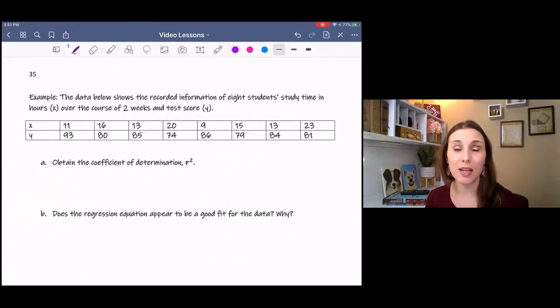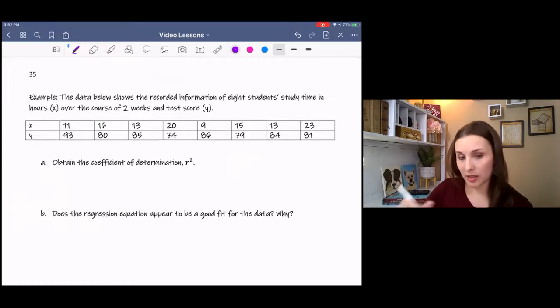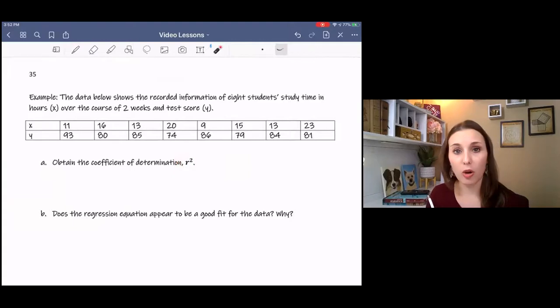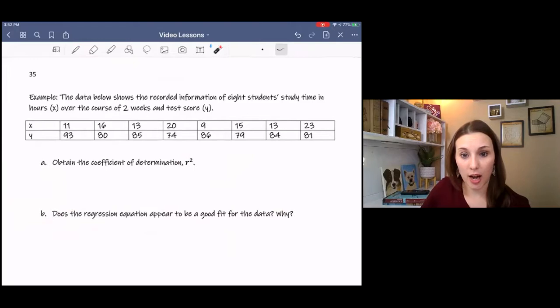This was the same exact example from the last video where we found the regression equation. So I want you to do those same steps again. And this time, instead of writing down the regression equation, I want you to write down the coefficient of determination, which is r squared. Then I want you to decide if it's a good fit or not. So go ahead and pause it and try it and come back and compare.